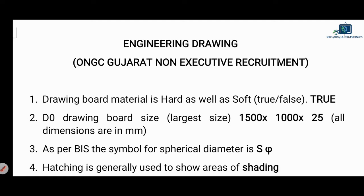Next question on drawing board size: D0 is the largest size. The sizes go D0, D1, D2, D3 — D0 is the largest. Its dimensions are 1500 × 1000 × 25 mm, and the thickness is 25 mm. All dimensions are in mm.